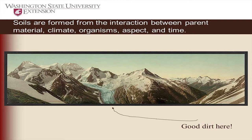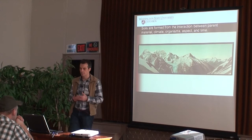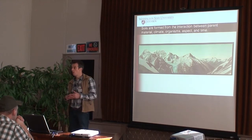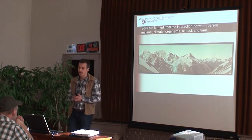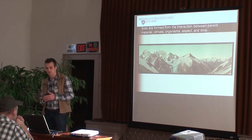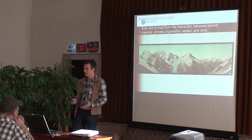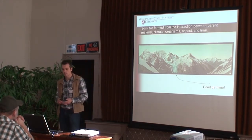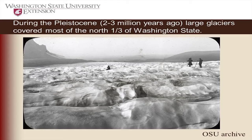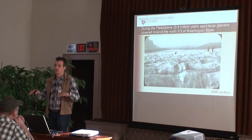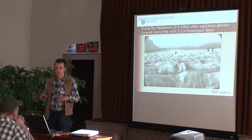Soils are formed by five soil-forming factors: parent material, climate, organisms, aspect — how you're facing on a hillslope — and time. The interaction between these five factors creates a specific soil at a specific site. In this part of the country, glaciers have played a really important part in forming what we see here around the specific soils and shaping that geography.